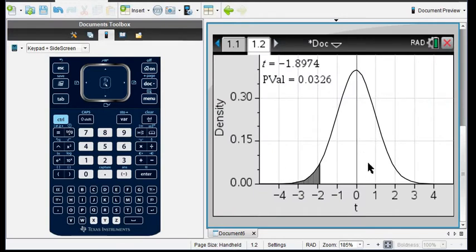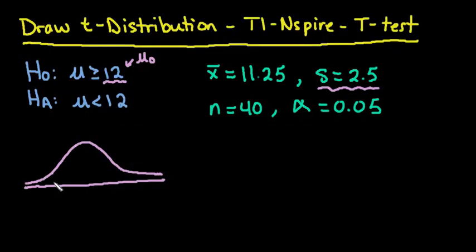So then I can just look at the drawing of my picture. So we see that our t is negative 1.8974 and our p-value is 0.0326. So then we can come and we can draw out our picture.